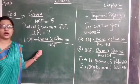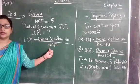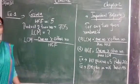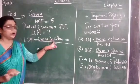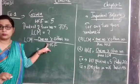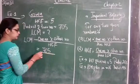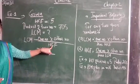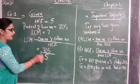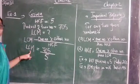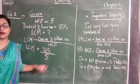Now in the next step we just have to put the values into the formula. One number into other number means the product of two numbers, which is already given — that is 705. In the formula, HCF is also there, and HCF is also given, that is 5. So LCM equals 705 divided by 5.